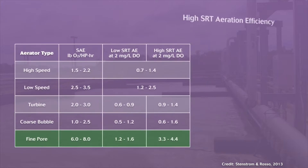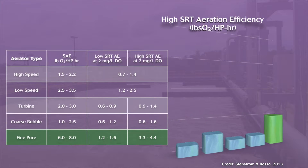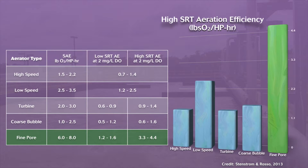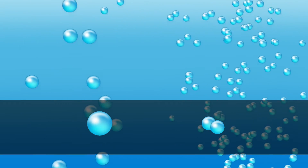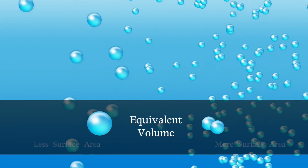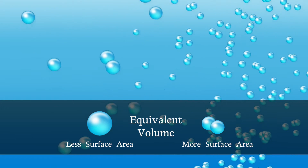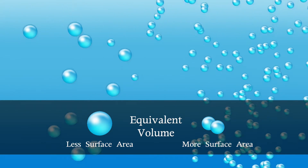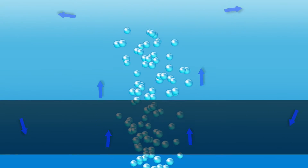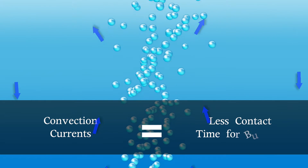Because fine pore diffusers are generally the most energy efficient aeration system, they are also the most common system in use today. The efficiency of fine pore diffusers comes from two basic principles: first, the formation of small bubbles which have a greater surface area relative to the volume of air inside the bubble, available for oxygen transfer across the bubble membrane; and second, the maximizing of bubble retention time in the tank through the reduction of convection currents.